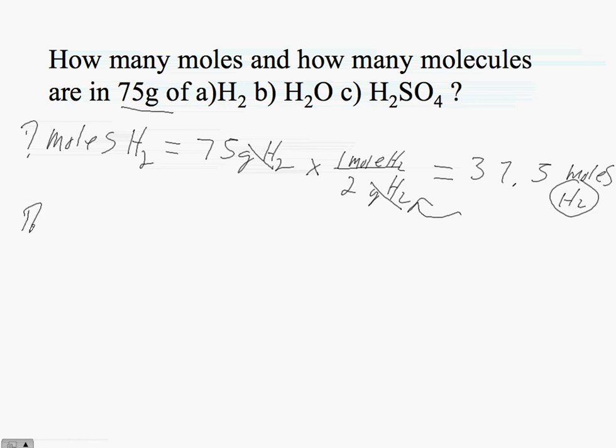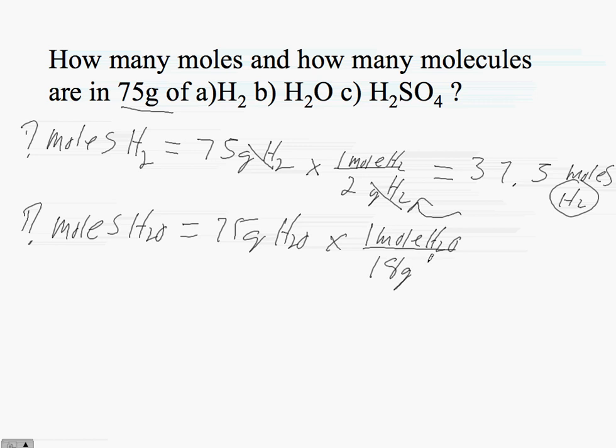We got the next question. How many moles of H2O is equal to 75 grams of H2O? So we do the same thing. We have our relationship. We know that for every 1 mole of H2O I have 18 grams of H2O. Grams of H2O cancel out. 75 divided by 18 would give me 4.2 moles of H2O.